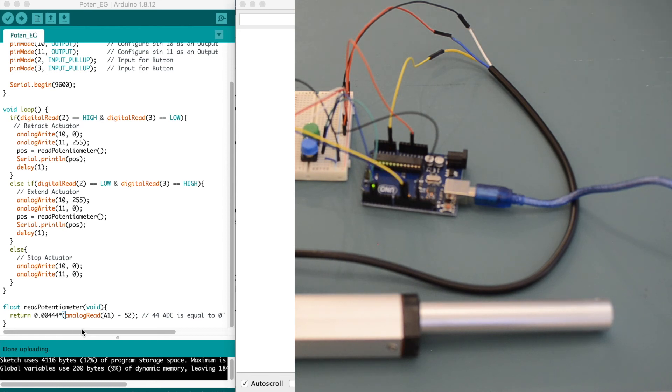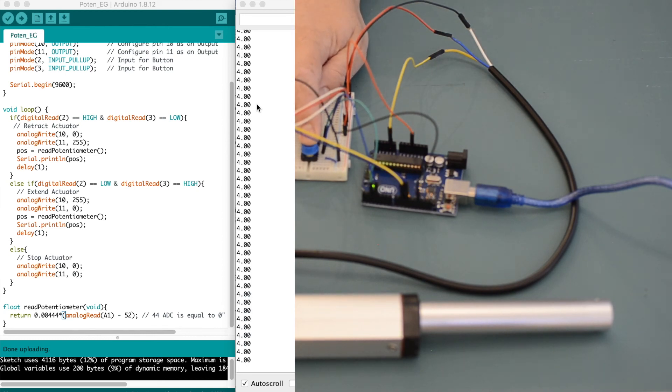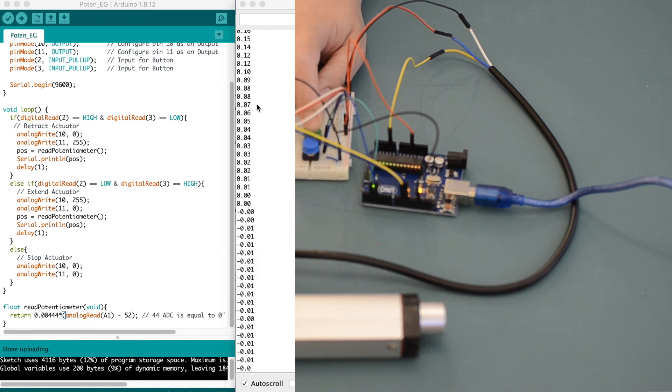Now when I print the value to the serial display, it'll show up in inches. So you can see here I'm pushing it forward, which is my maximum, and it displays 4 inches. And when I retract, we can see the value goes down towards zero.